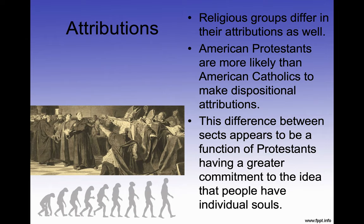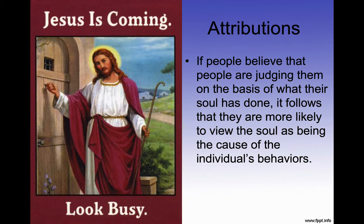Religious groups also differ in their attributions. American Protestants are more likely than American Catholics to make dispositional attributions, a function of Protestants having a greater commitment to the idea that people have individual souls. Catholics are more collectivist in their way of looking at things, whereas in most Protestant religions each individual has their own individual pathway to heaven — making them far more individualistic. If people believe they are judged on the basis of what their soul has done, it follows that they view the soul as the cause of individual behavior.